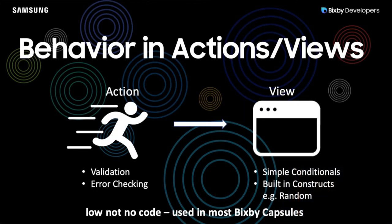Let's talk about the first design pattern: behavior in actions and views. This really isn't exclusively a no-code design pattern — it's something you do throughout Bixby, including more complicated capsules where you may write some code. But there's an awful lot of behavior defined in the models for your actions and your views. Typically in an action, things like validation and error checking are done, and then in the view itself you can have some simple conditionals.